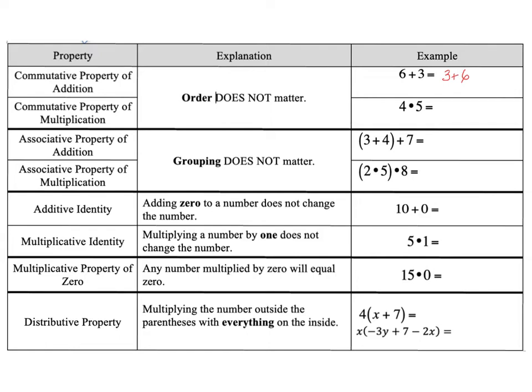The same with multiplication. I can multiply 4 times 5 or I can multiply 5 times 4 and I will get the same value. So commutative property says the order that we perform the operation does not matter.